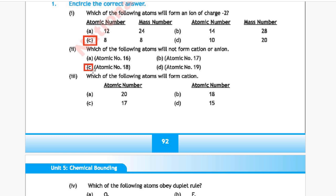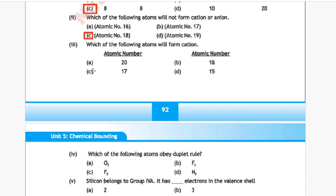Question 3: Which of the following atoms will form a cation? Option A: atomic mass 20, Option B: atomic mass 18, Option C: atomic mass 17, Option D: atomic mass 15. The correct answer is Option A, atomic mass 20.